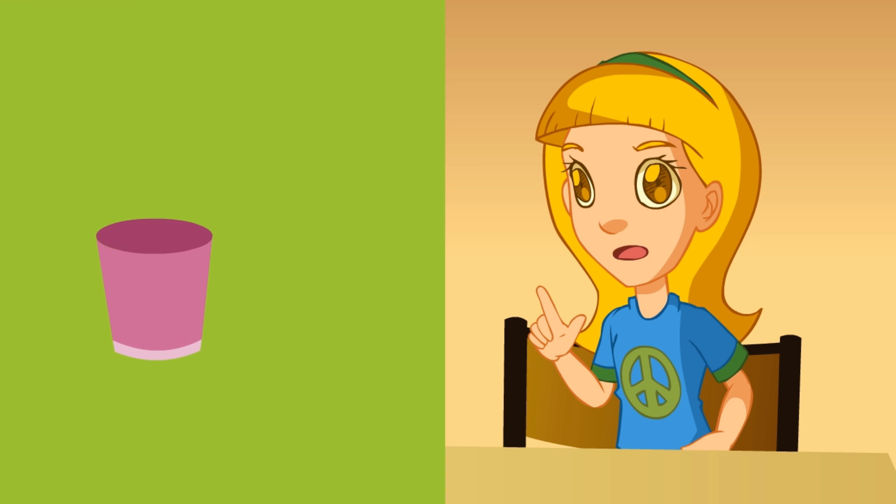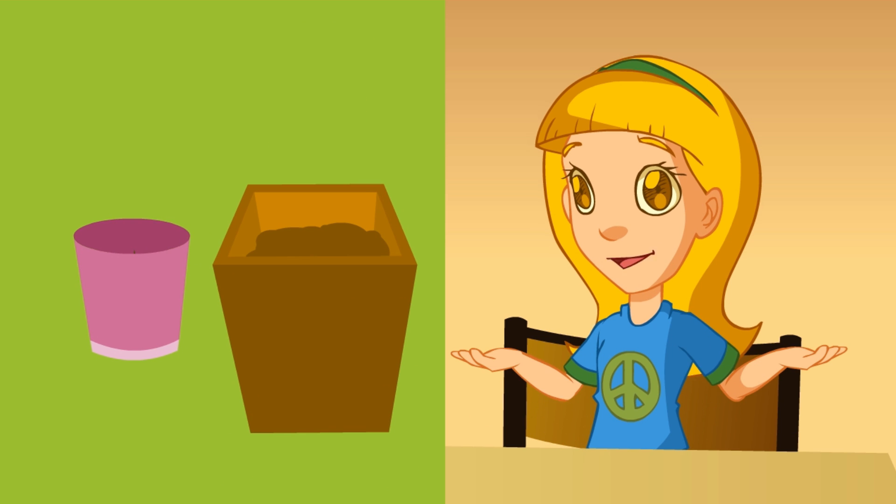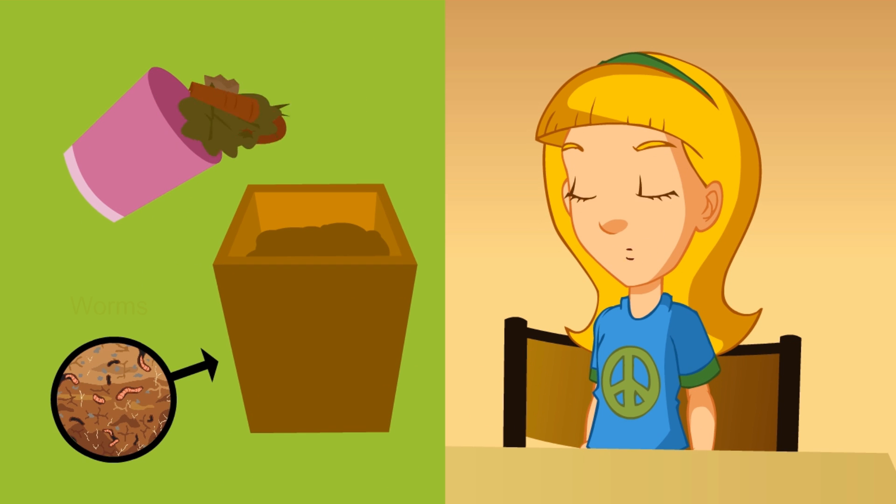My mom's got two dustbins. She puts what's left from salads, eggshells, and the like in one of them. And when there's enough rubbish in it, she buries all that in a flower pot where she's got worms.